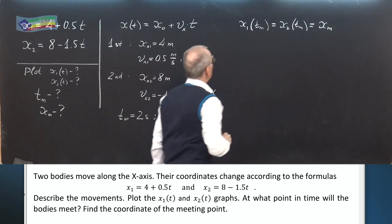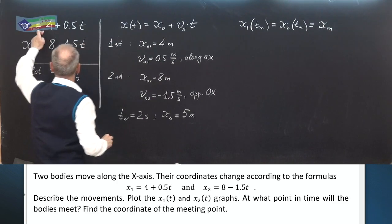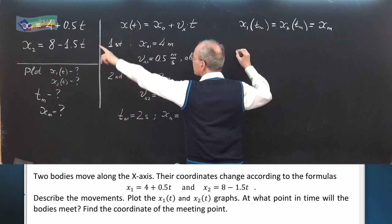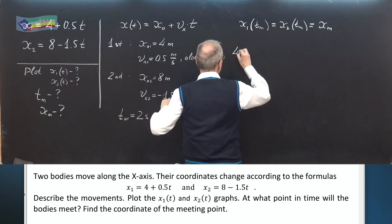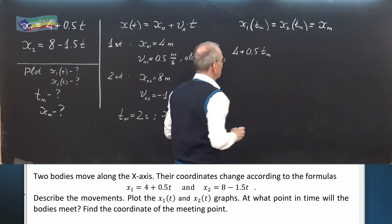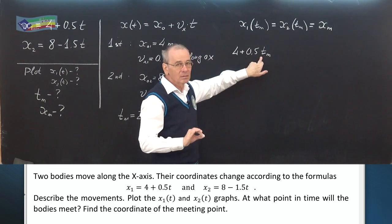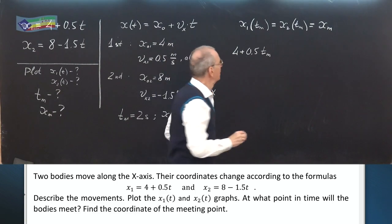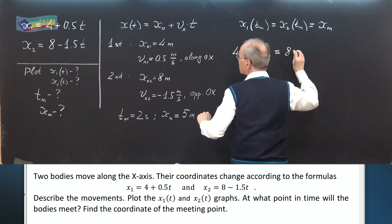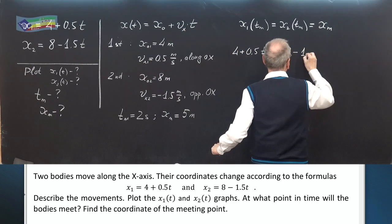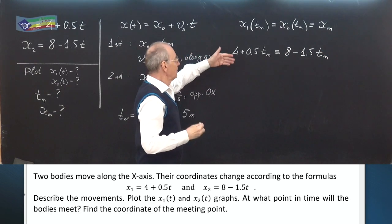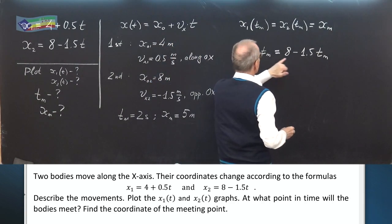We can write x₁ at the moment of meeting equals x₂ at the same moment and equals x of meeting. Now, let's substitute these two formulas into meeting conditions. We have 4 plus 0.5 tₘ. Pay attention, no t, but tₘ, time of meeting, equals 8 minus 1.5 also tₘ. We have an equation. And let's find the solution of this equation.